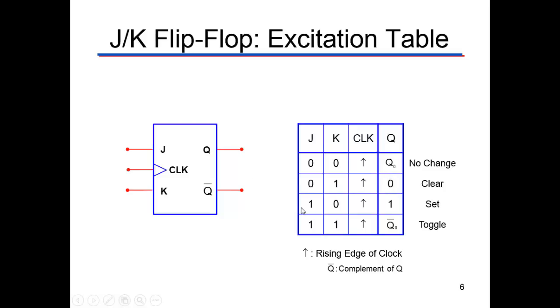So then when J is one, K is zero, that's when you set Q to one when the clock comes by. And then when they're both one, that's called the toggle condition, and it will just flip the values of Q and not Q.